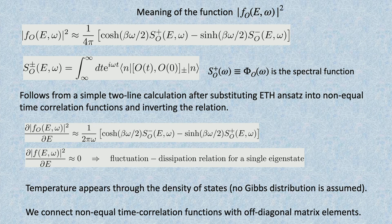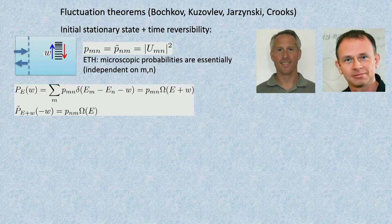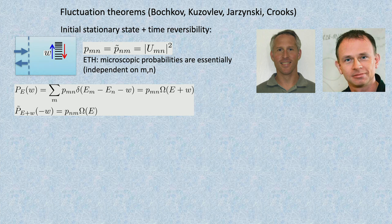Many other statements of thermodynamics follow. Some of you may have heard of the Jarzynski and Crooks equalities. They relate the probability of doing work W — basically increasing your energy by W. Let me show how easy it is to make these statements using ETH. Suppose I have a process: I send light to the system, or I hit it with a hammer. As a result, I get transitions between levels. I can ask what's the probability of increasing energy versus decreasing energy.